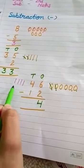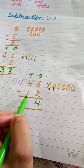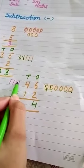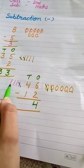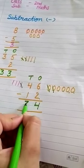And here is 4 given, so draw 4 lines. And here is 1 number, so cut 1 line. Now count: 1, 2, 3. So the answer is 3.